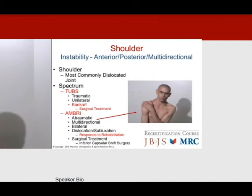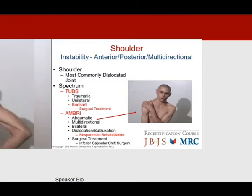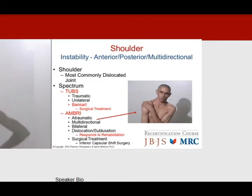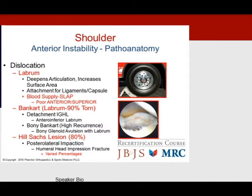Multidirectional instability — atraumatic, bilateral — usually requires rehabilitation. In rare circumstances, an inferior capsular shift may be beneficial. Traumatic unilateral anterior instability can be treated with a soft tissue procedure like a Bankart repair.